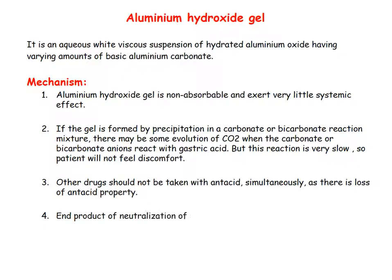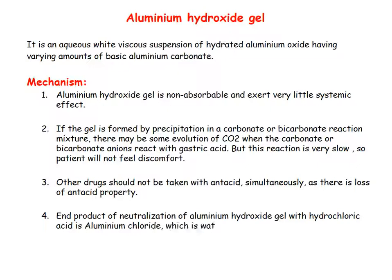The end product of neutralization of aluminium hydroxide gel with hydrochloric acid is aluminium chloride, which is a water-soluble astringent. This may cause constipation, nausea, and vomiting.